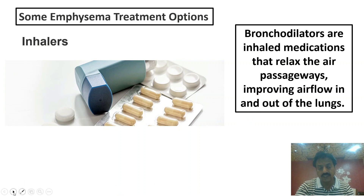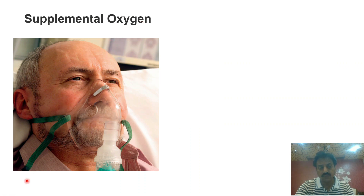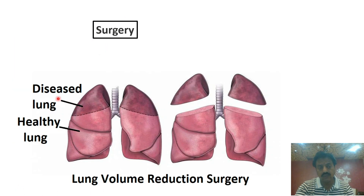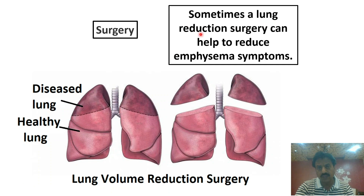Number two: oxygen supplement — patients کو دیا جاتا ہے۔ Many people with emphysema use supplemental oxygen to ensure the body receives enough oxygen۔ Surgery بھی ایک option ہے — lung volume reduction surgery کی جاتی ہے — جو volume بڑا ہوا تھا، وہ portion surgery کے through کم کیا جاتا ہے۔ Sometimes lung reduction surgery can help reduce emphysema symptoms. Thank you dear students, wishing you all the best.